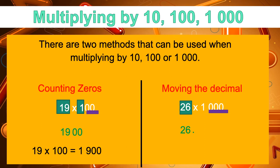So that means we move our decimal point three spaces. But be careful — we're moving the decimal point three spaces to the right: one, two, three spaces. Our decimal point moves here. Now, in our empty spaces, we place a zero — one, two, three. That changes our number.